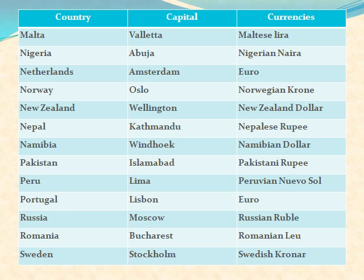Namibia: its capital is Windhoek and currency is Namibian dollar. Pakistan: its capital is Islamabad and currency is Pakistani Rupee. Peru: its capital is Lima and currency is Peruvian Sol. Portugal: its capital is Lisbon and currency is Euro. Russia: its capital is Moscow and currency is Russian Ruble. Romania: its capital is Bucharest and currency is Romanian Leu.